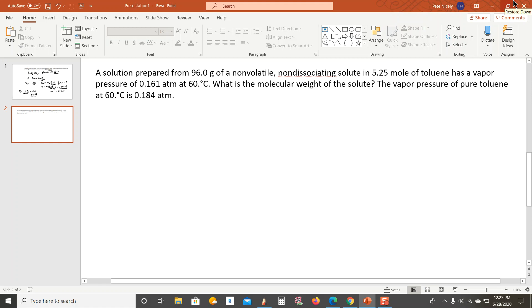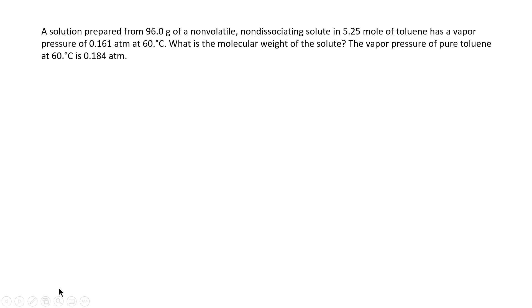Let's look at another example involving vapor pressure, Raoult's law, and all the good stuff. In this case, going to full screen mode, the task is to determine the molecular weight of the solute. It gives us the mass of the solute — 96 grams — and tells us that the solute is non-volatile. It also says the solute is non-dissociating, and gives us the moles of the solvent, toluene: 5.25 moles. It also gives the vapor pressure of the solution, which is 0.161 atmospheres.